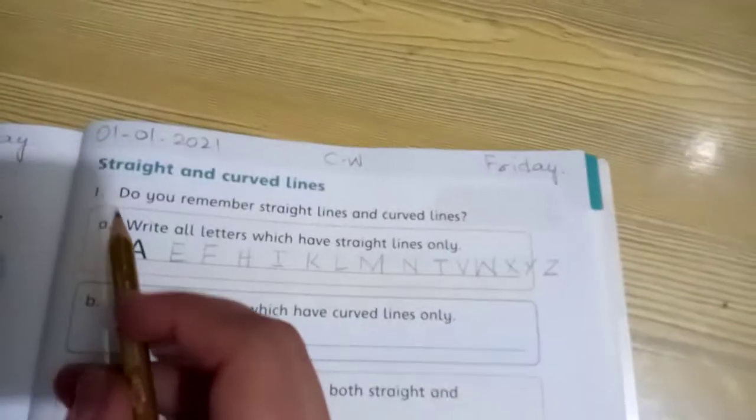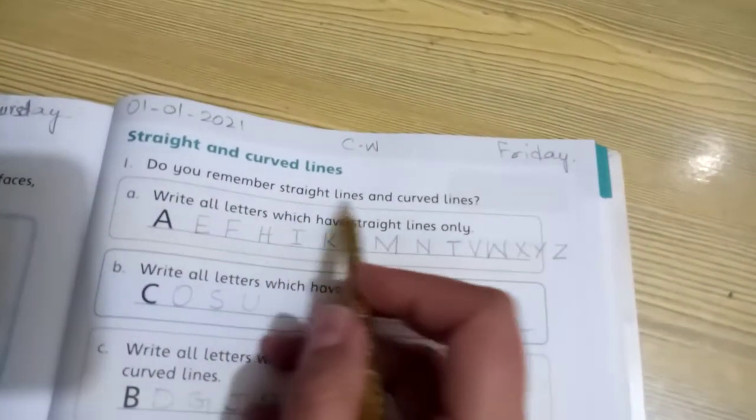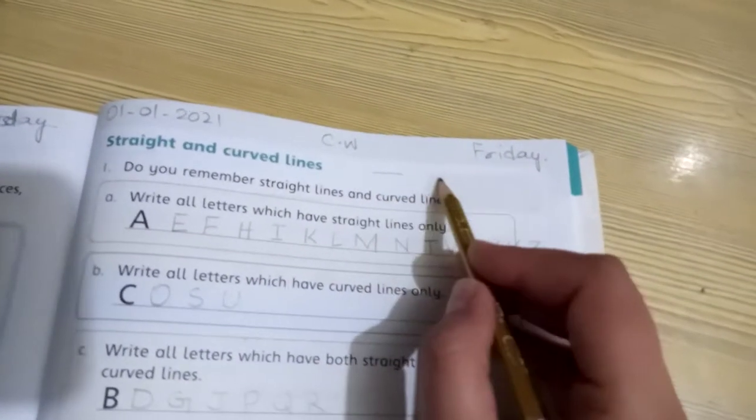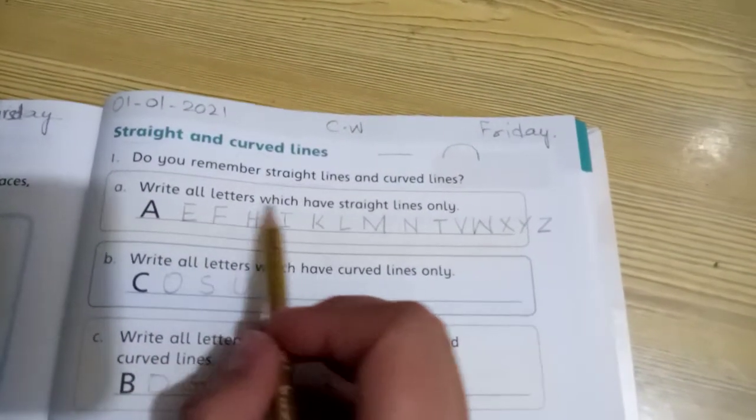Do you remember question number one? Do you remember straight lines and curved lines? Straight lines, curved lines which are round. Part A: write all letters which have straight lines only, all the alphabet letters from A to Z which are straight lines.